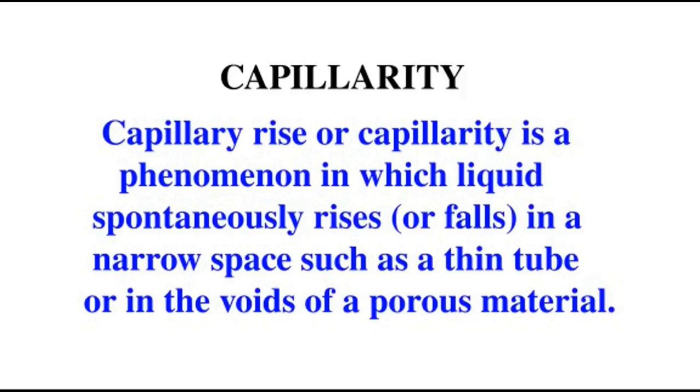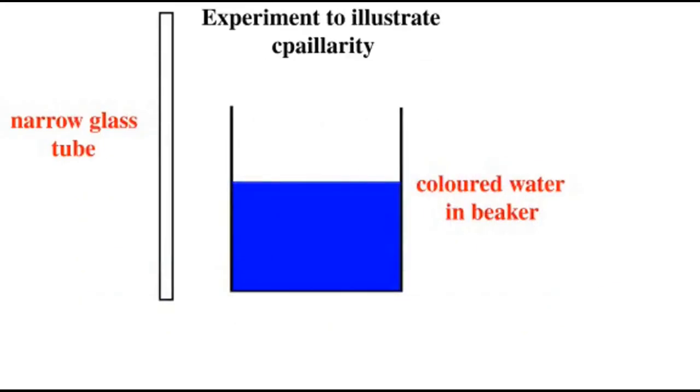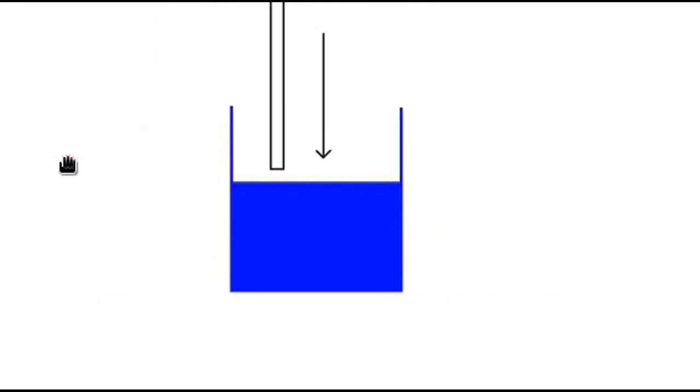To illustrate this, let us carry out a simple experiment. We take colored water in a beaker and we have a very narrow glass tube. Now we gradually dip this glass tube into the colored water. We are just dipping into the surface of the liquid in the beaker. Wow! Just look at the colored water rising in the tube. It will rise to a certain level and then it will remain at that level. Even if we dip the tube deeper into the water, the water level will remain the same.